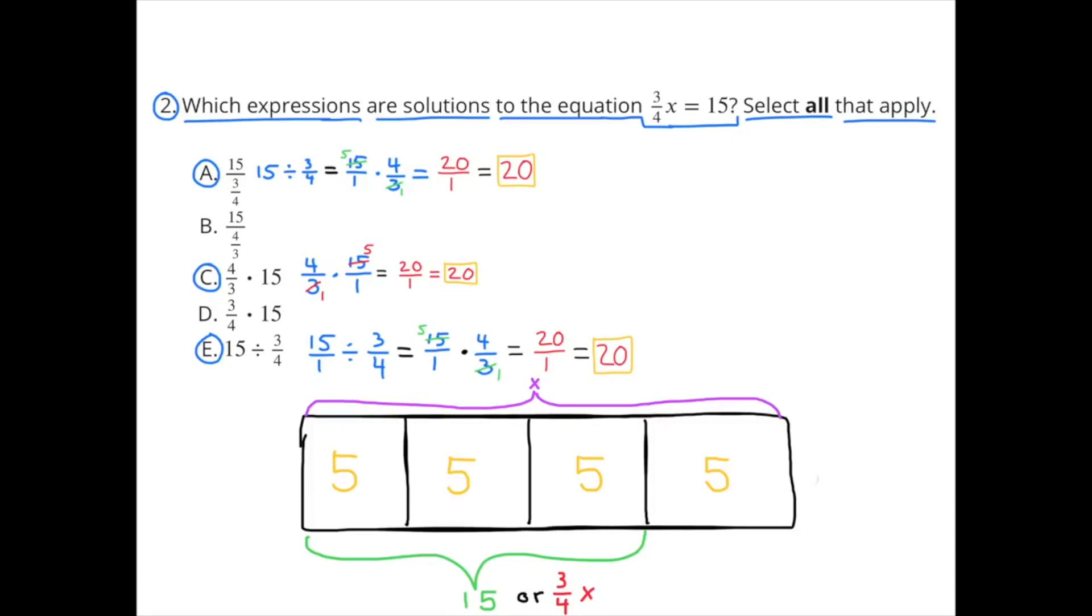I selected C because 4 thirds times 15 is the same as 15 times 4 thirds. And if you notice on A and E, when we divide by 4 thirds, it's the same as multiplying by its reciprocal, which is multiplying by 4 thirds, which is what we did for C. So I would select A, C, and E.